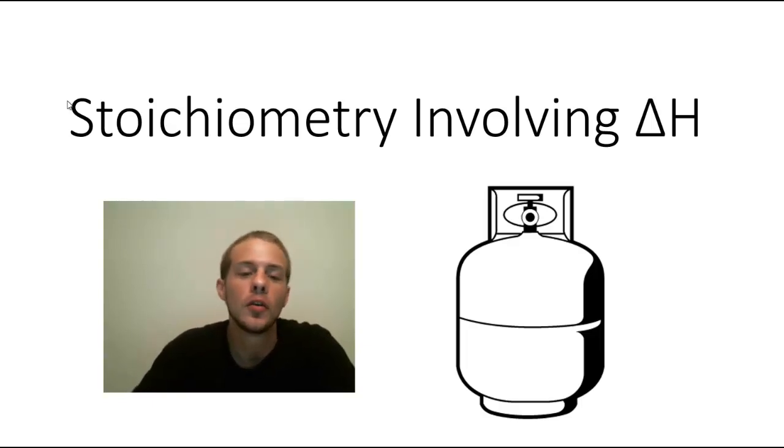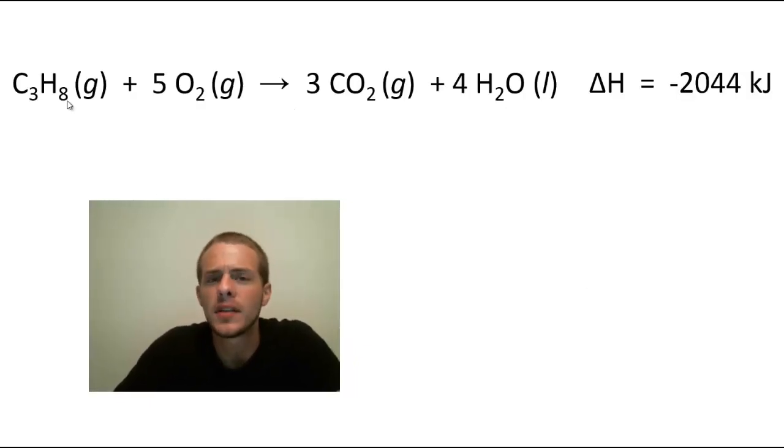And we're going to do conversions that are very similar only we're going to sort of apply delta H in the mix. So if we take a look at the balanced chemical equation for the combustion of propane, well we have propane reacting in the presence of oxygen to produce CO2 and water and notice that those coefficients are 1, 5, 3, and 4 for propane, oxygen, CO2, and water respectively. And then notice also that we have this delta H value that is shown. It's minus 2,044 kilojoules. So what does that mean?